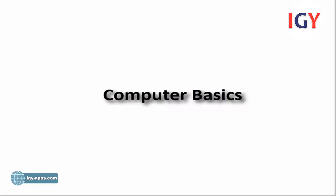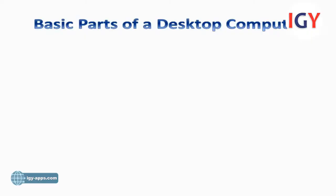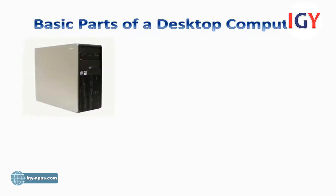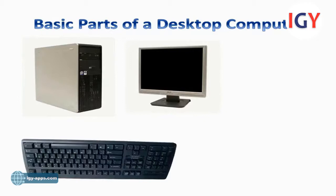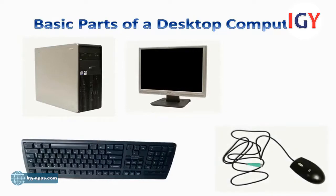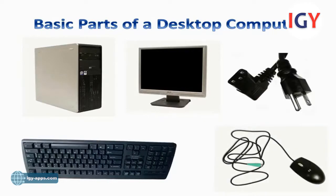Computer Basics: Basic parts of a desktop computer. The basic parts of a desktop computer are the computer case, monitor, keyboard, mouse, and power cord. Each part plays an important role whenever you use a computer.